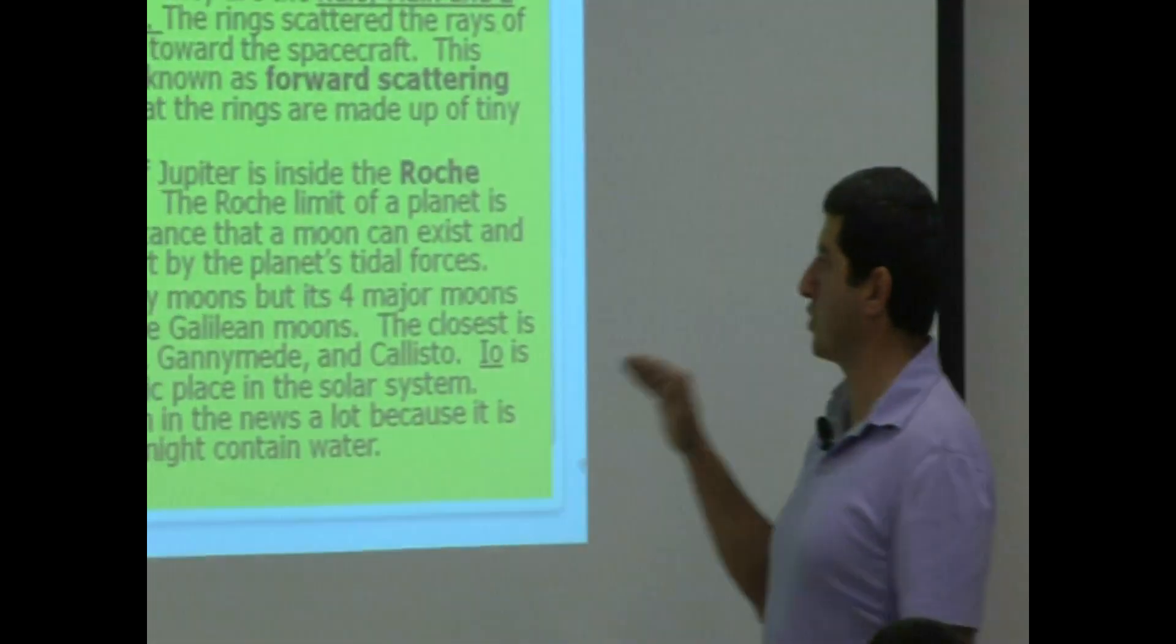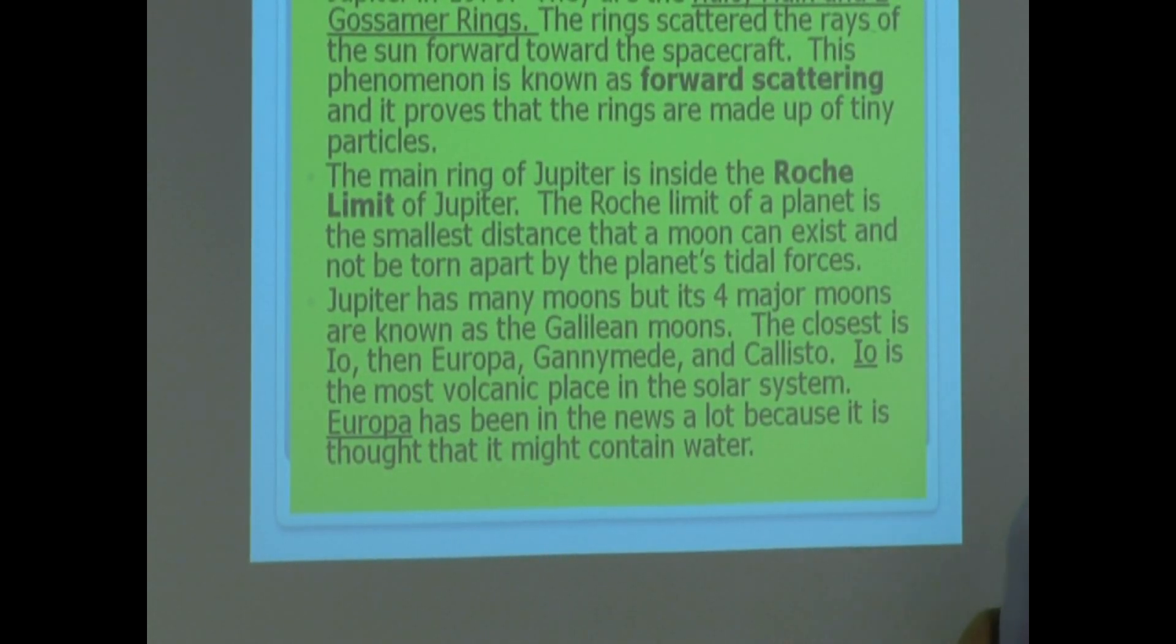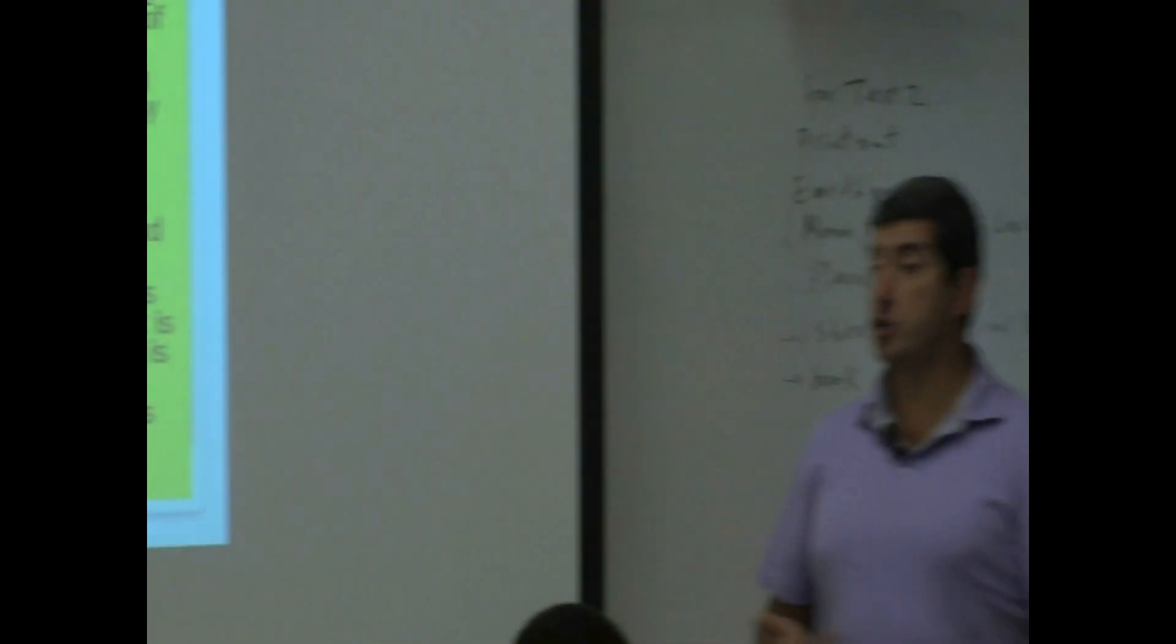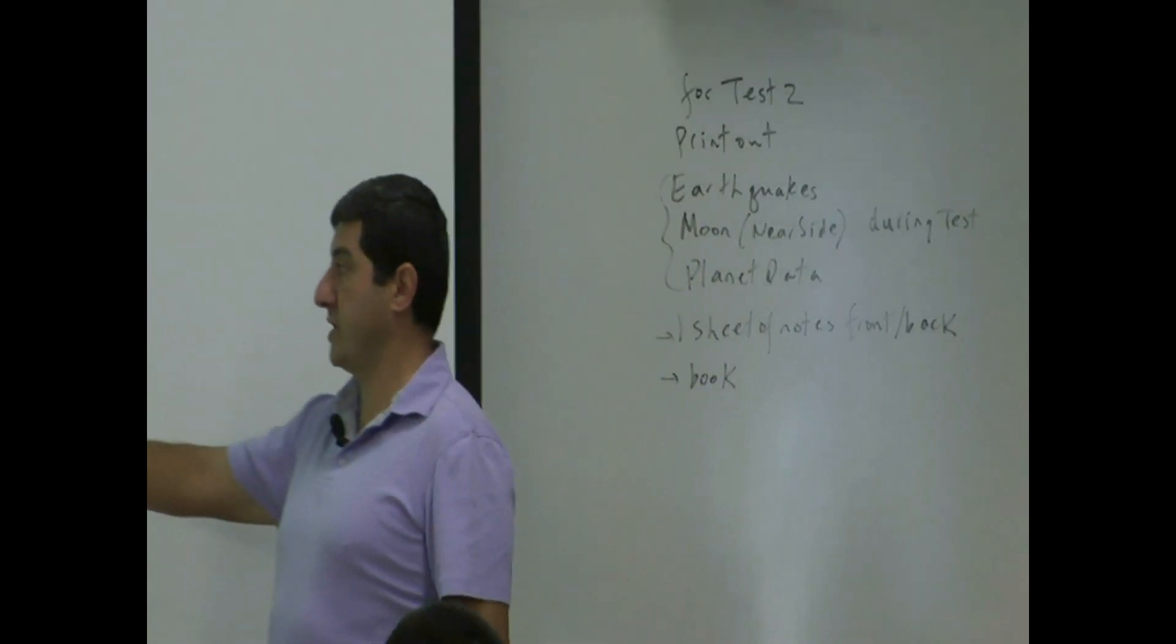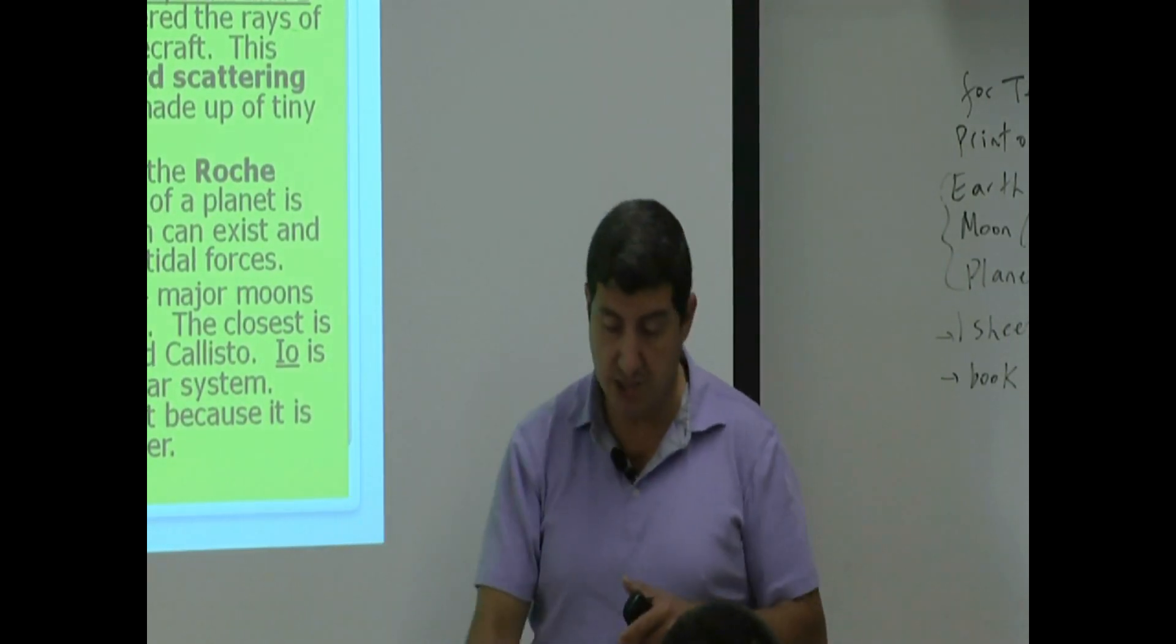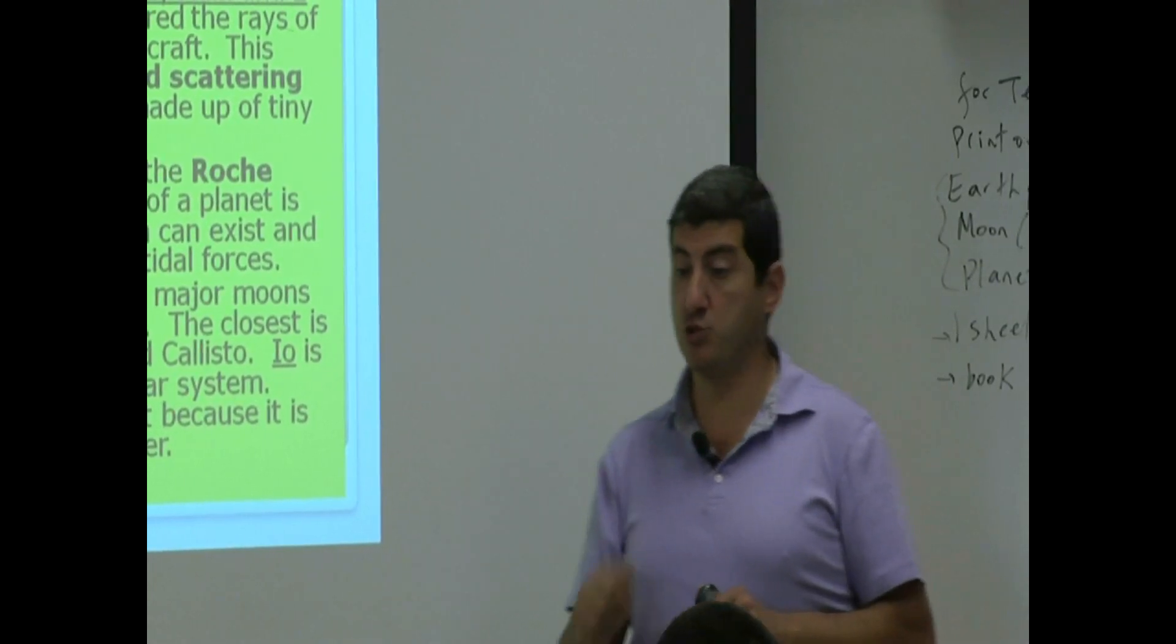Io is the most volcanic place in the solar system. Europa has been in the news a lot because it is thought that it might contain water. You're going to hear a lot more about Europa, by the way, in the future as we do more research and we even send the spacecraft there to dig in the water, see if there's life form in Europa. It's going to be in the news a lot.